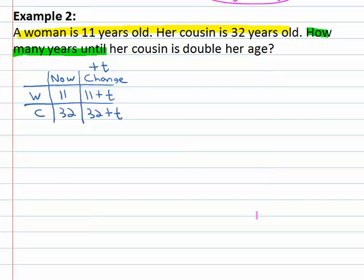And what happens at this point in the future? The cousin is double the woman's age. The cousin is double, two times the woman.